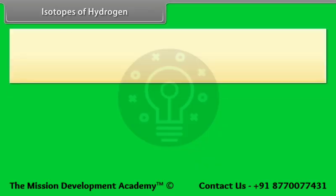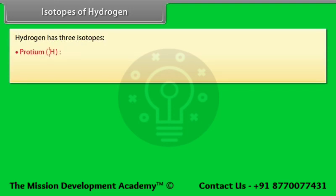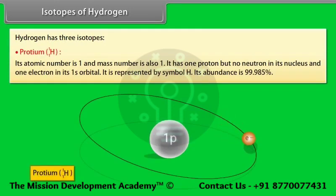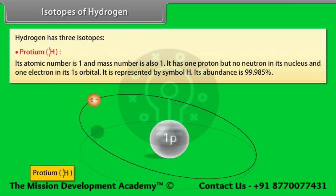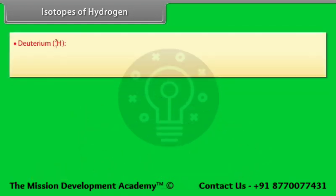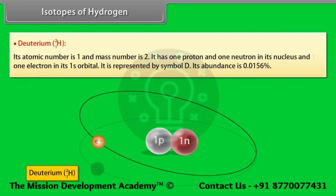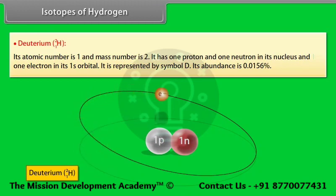Hydrogen has three isotopes. Protium: its atomic number is 1 and mass number is also 1. It has one proton but no neutron in its nucleus and one electron in its 1s orbital. It is represented by the symbol H. Its abundance is 99.985%. Deuterium: its atomic number is 1 and mass number is 2. It has one proton and one neutron in its nucleus and one electron in its 1s orbital. It is represented by the symbol D.